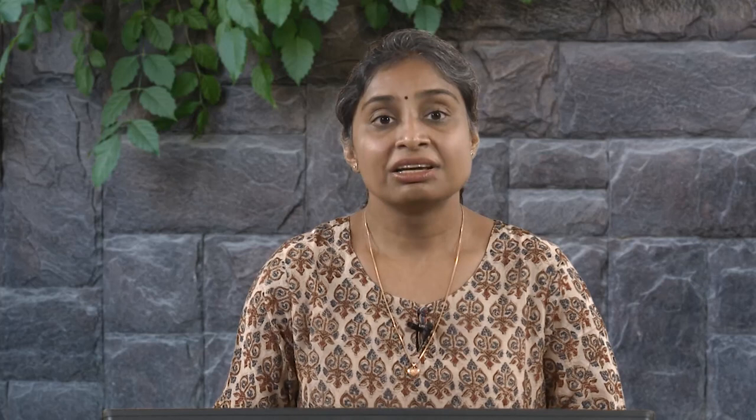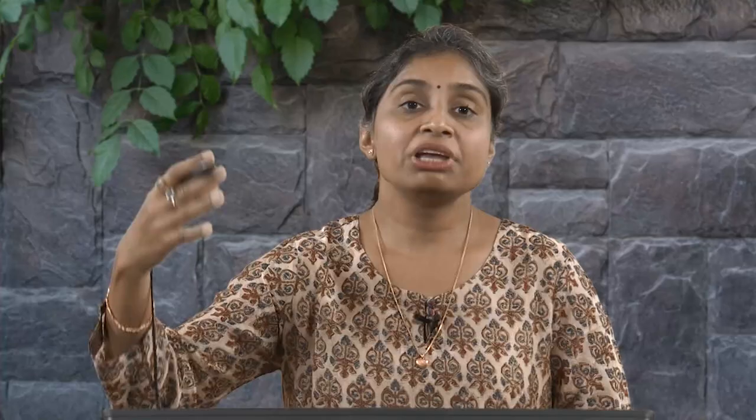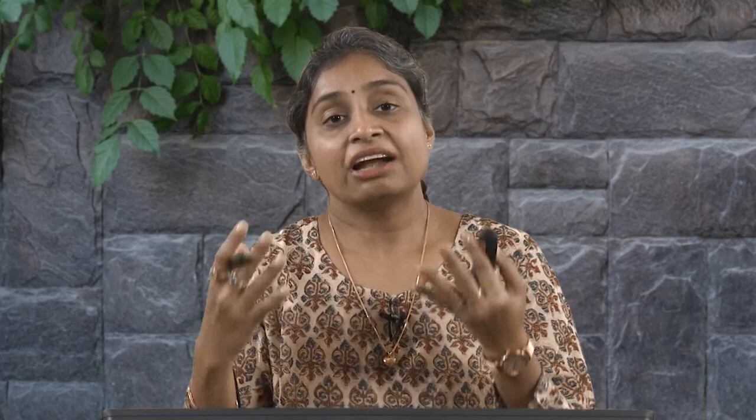Nuclear waste repository is another application — nuclear waste is deposited deep below the earth's crust, where again you have rock. We need to appropriately design these structures to serve for 100, 200, or 300 years. Then there are open cast mines — in rocky strata, you cannot cut the slope blindly; you need to assess whether the slope is stable at the angle being cut.